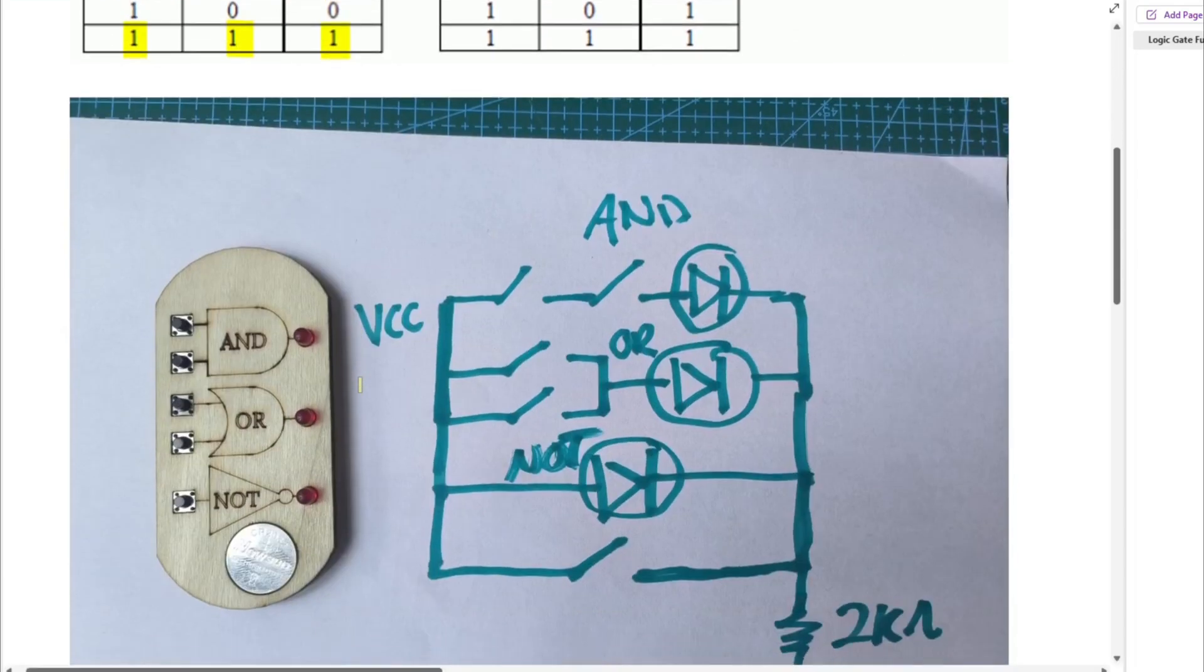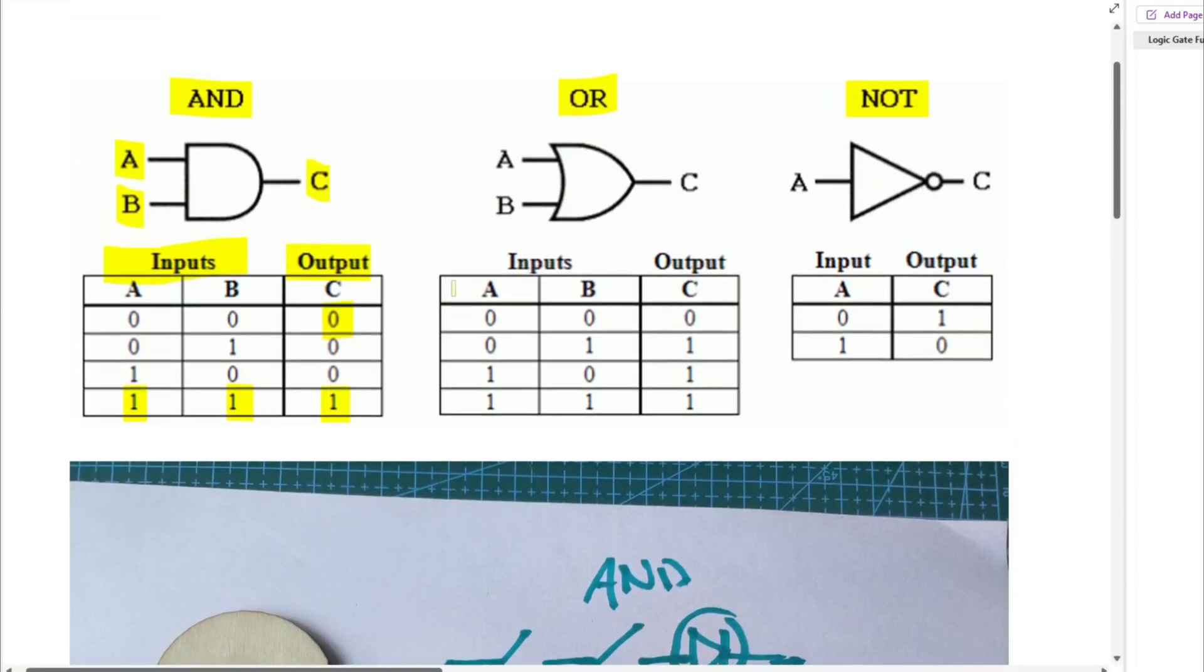Only when A is 1 and B is 1, then the output is 1. So my little diagram here is if you push in these two buttons on the AND, this LED will light up like it's a gate. The OR is on if either OR, or both of them are on.